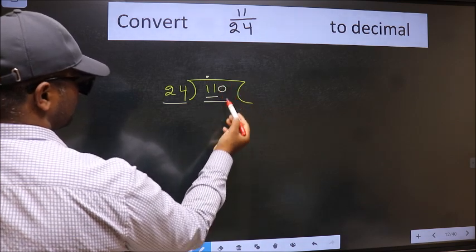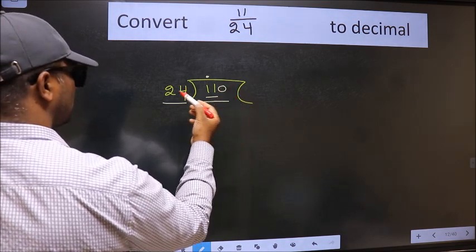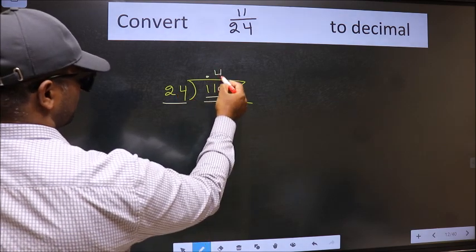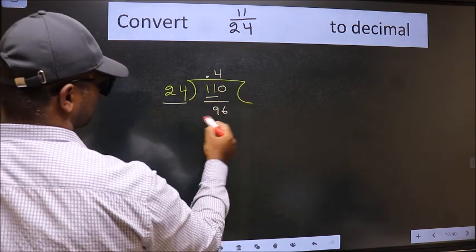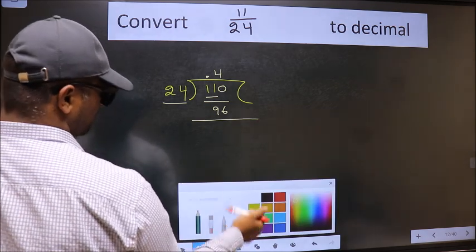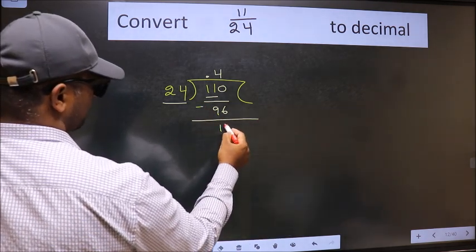So 110. A number close to 110 in 24 table is 24 fours, 96. Now we should subtract. We get 14.